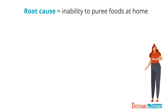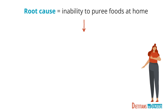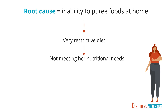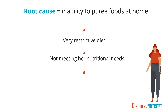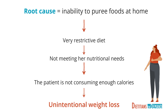But there's only one root cause of this patient's inadequate energy intake. By addressing only one of these contributing factors, you could also improve some of the others. In this scenario, the root cause is her inability to puree foods at home. This has led to a very restrictive diet which is not meeting her nutritional needs. The bottom line is, this patient is not consuming enough calories, which has led to unintentional weight loss.